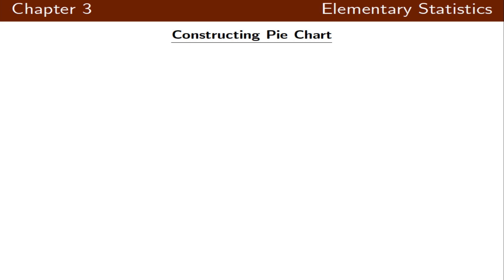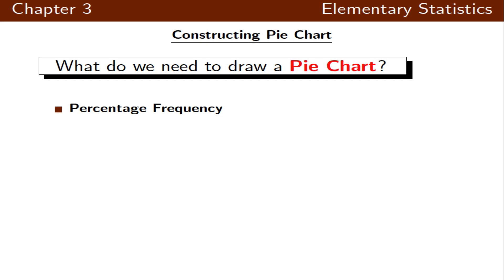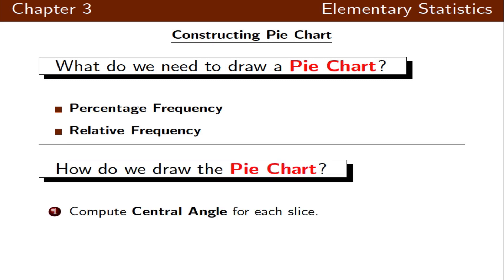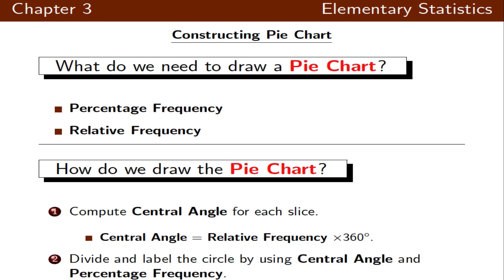Now let's construct a pie chart. We need the frequency distribution table, the column with percentage frequency, or we can use the relative frequency. We can use the central angle for each slice of the pie chart. To do that, we take the relative frequency times 360 degrees, which is around the circle. This gives us an indication of how many degrees the central angle has for each slice.